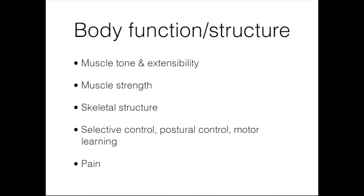Moving into body function and structure impairments in children with cerebral palsy. First, issues with muscle tone and extensibility — usually we see high or low muscle tone in CP. Tone generally increases up to age four and then might decrease to age 12, though different children have really different patterns. Spasticity is often associated with clonus, pathological reflexes, and certain postural and movement patterns. This problem with tone gets worse over time, as muscles may not relax during activity and muscle growth often doesn't keep up with bone growth, creating a vicious cycle of chronic muscle imbalance, abnormal posture, weakness, and abnormal reflex activity.